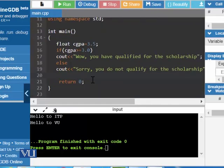As we discussed, currently CGPA contains the value 3.5 and this if statement will be true as 3.5 is greater than or equal to 3.0. We will get the message wow, you have qualified for the scholarship. However, this statement will not be executed as it is the else part of this if statement. If this condition is false, then the else statement will be executed.